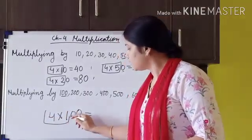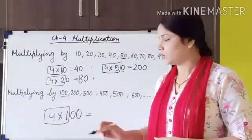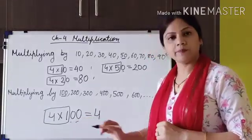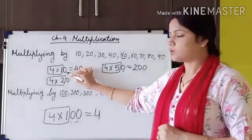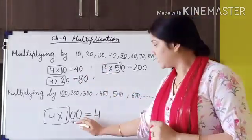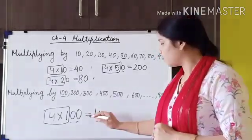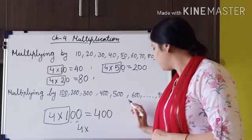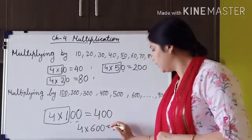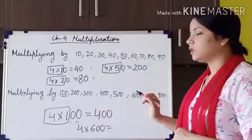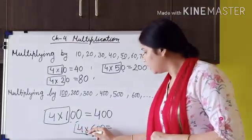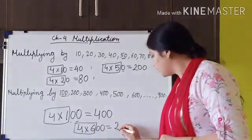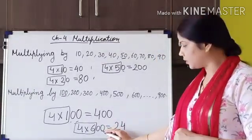Simply multiply the non-zero digits: 4 ones are 4. And since there are 2 zeros in 100, we put 2 zeros at the end. Now for 4 multiplied by 600: multiply 4 by 6 — 4 sixes are 24. Then put these 2 zeros after 24.